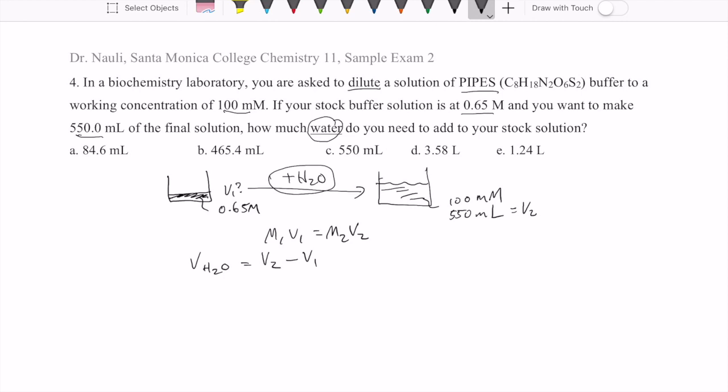So in other words, you first have to solve for V1 because we don't have that right now. But then once we solve for V1, we have to subtract it to obtain the volume of water. So let's do that.